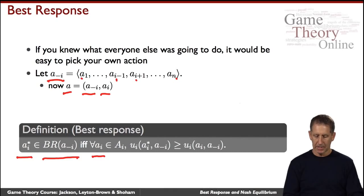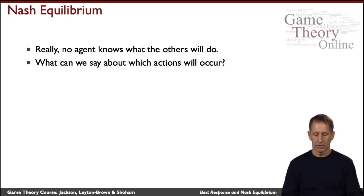it's got to be the case that your utility for playing that, in other words, when you're playing a_i^* and the others are playing a_{-i}, for whatever it is, has got to be at least as great as anything else you might choose, a_i. If that's the case, we'll say that a_i^* is a best response. Very intuitive notion.